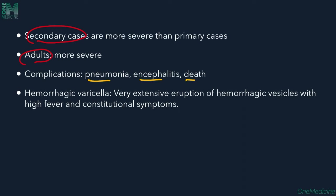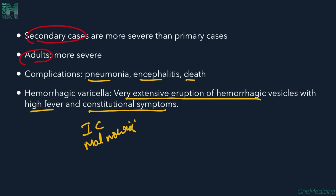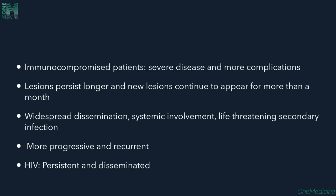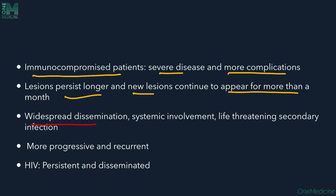Hemorrhagic vesicles are extensive and associated with high fever and constitutional symptoms; they are mostly seen in immunocompromised and malnourished patients. In immunocompromised patients, severe disease and more complications are seen — lesions persist longer, new lesions continue to appear for more than a month, with widespread dissemination, systemic involvement, life-threatening secondary infections.